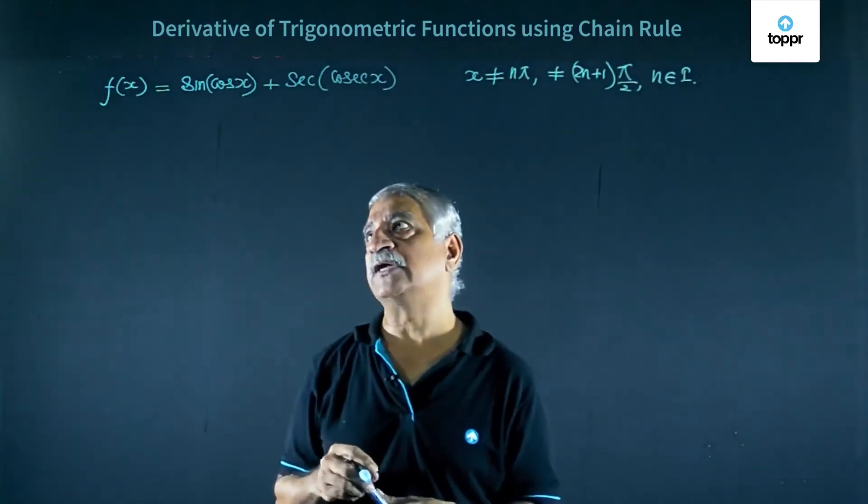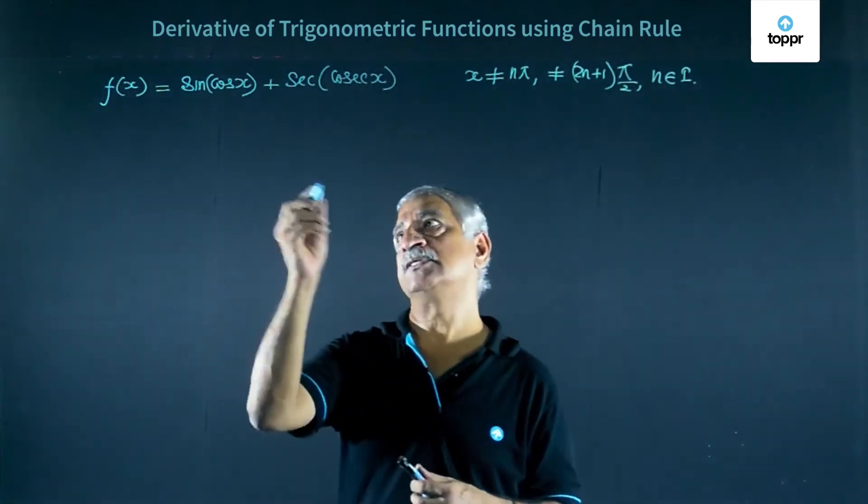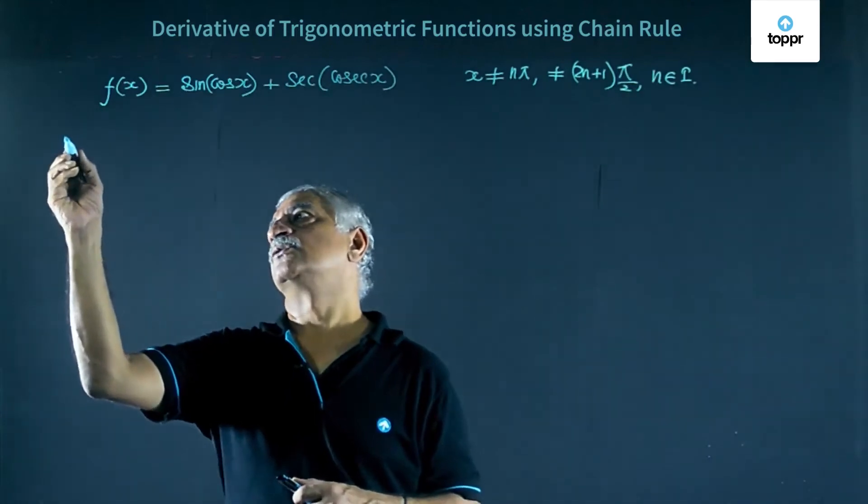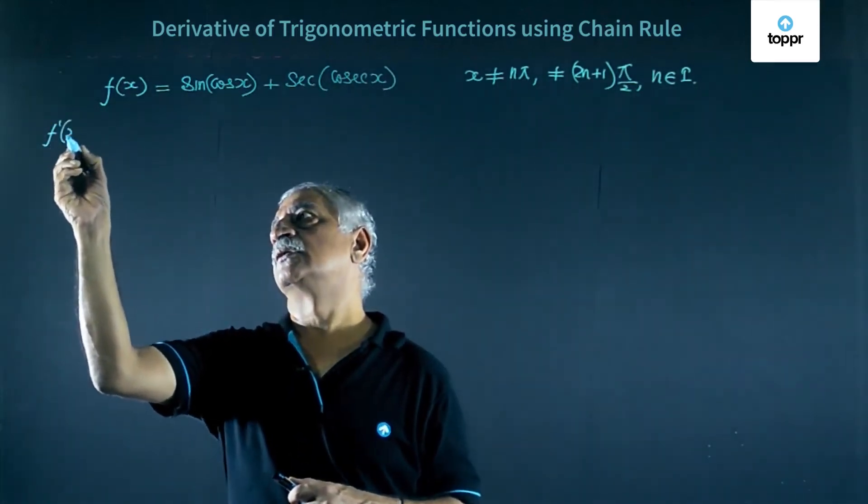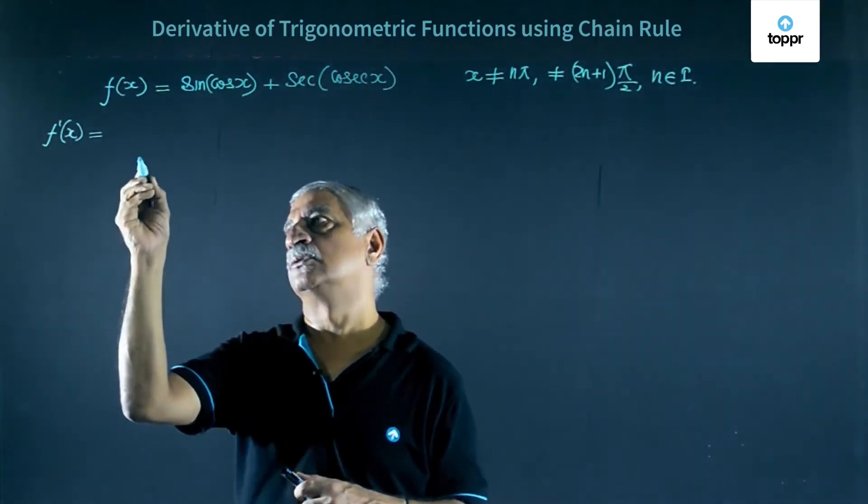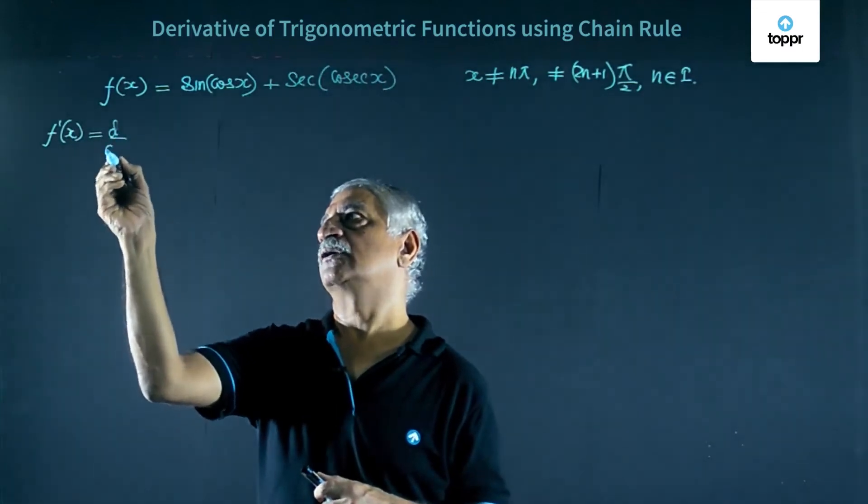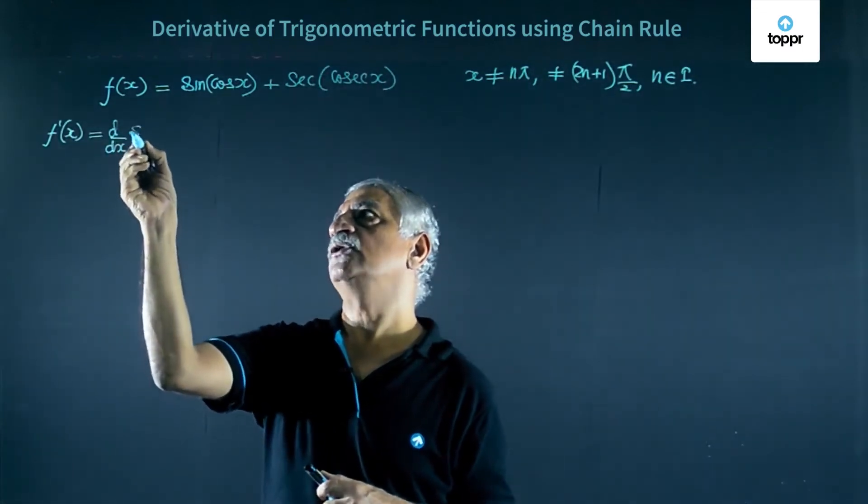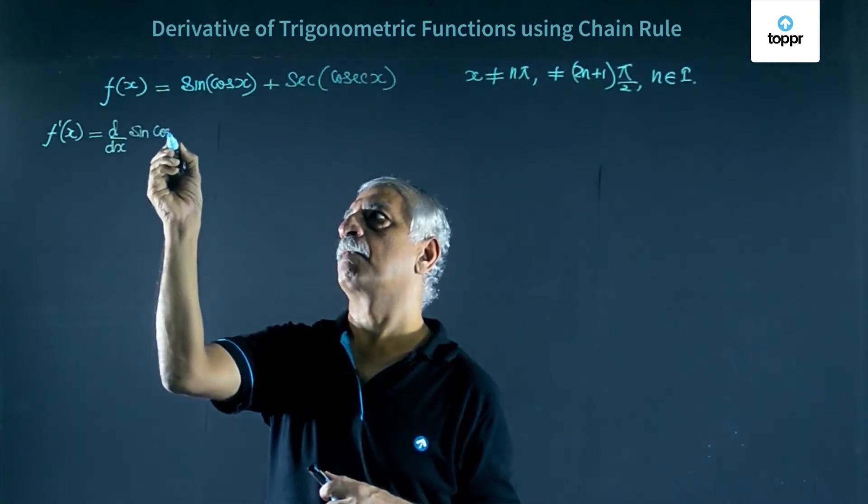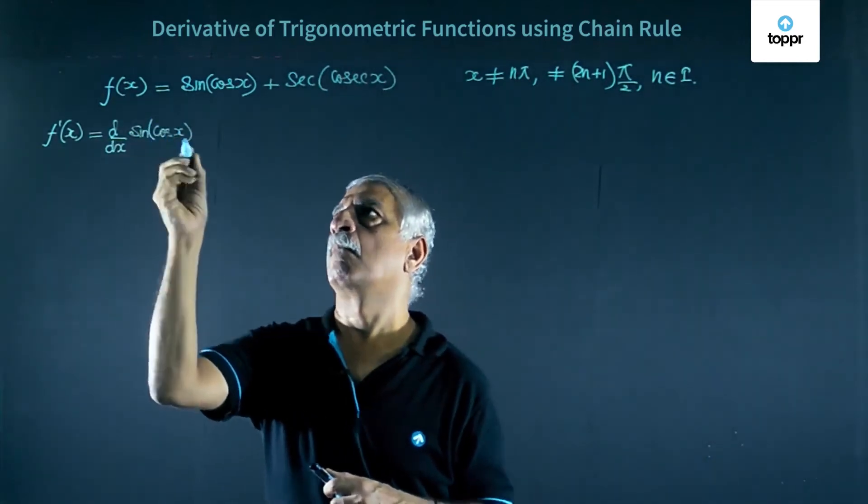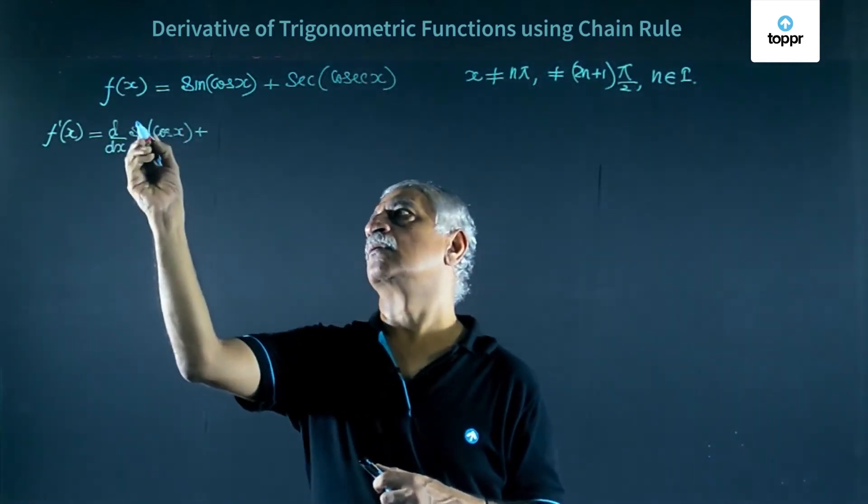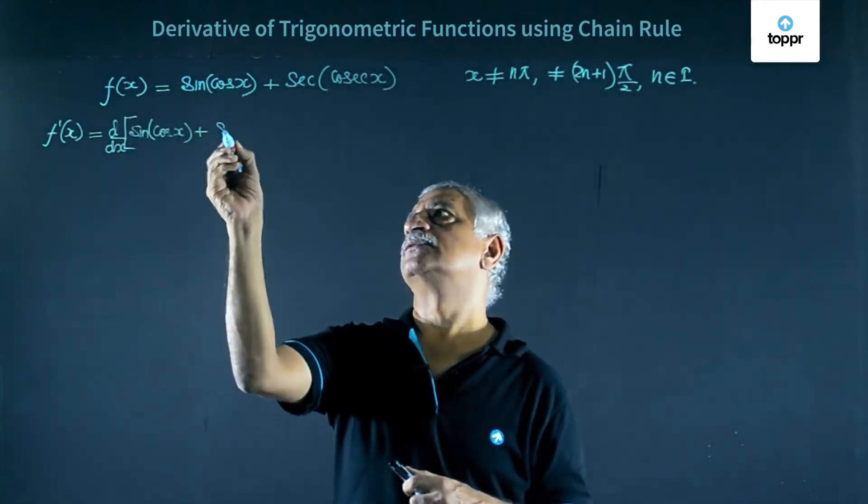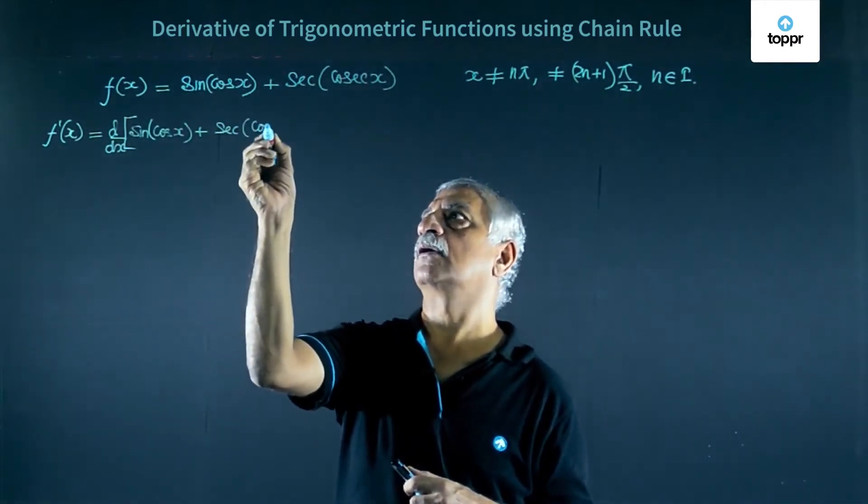We need to find out the derivative of this function. So f dash x, this is equal to d by dx of sine of cos x plus sec of cos sec x.